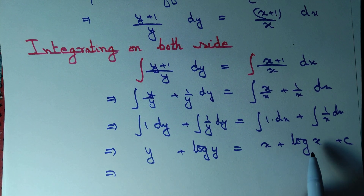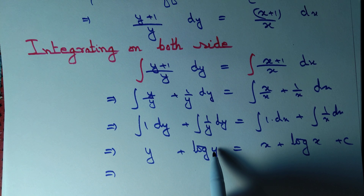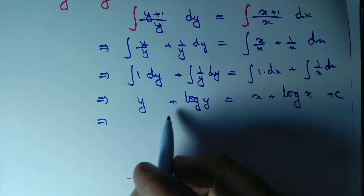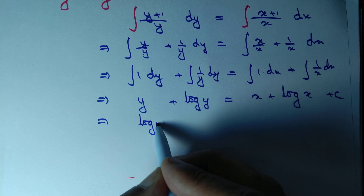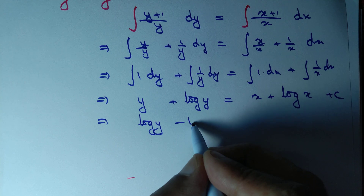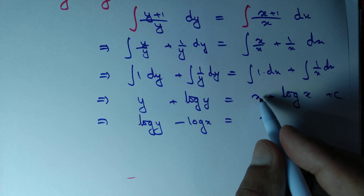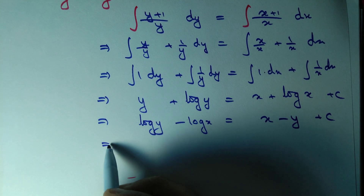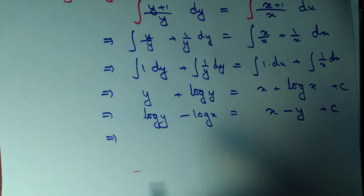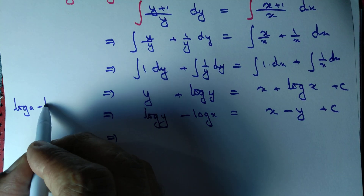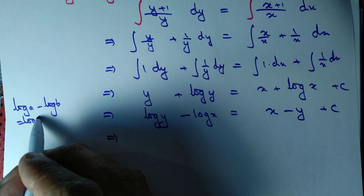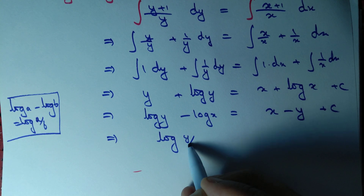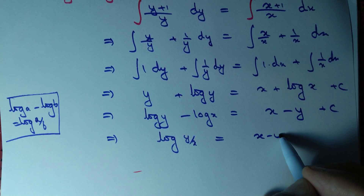We can simplify by moving the log terms to the left hand side and the non-log terms to the right hand side. So we write log y minus log x on the left, and x minus y plus some constant of integration on the right. Using the identity log a minus log b equals log(a/b), we obtain log(y/x) equals x minus y plus C.